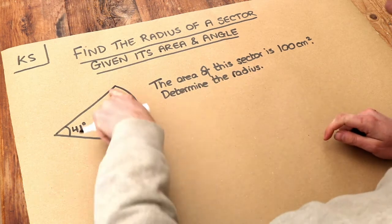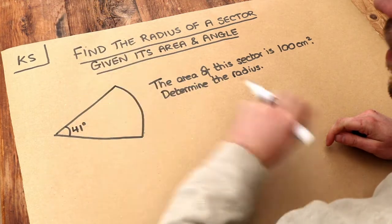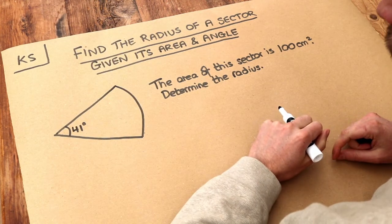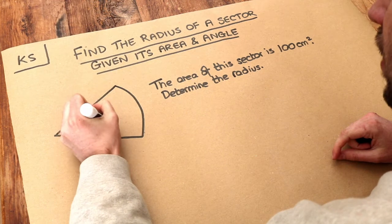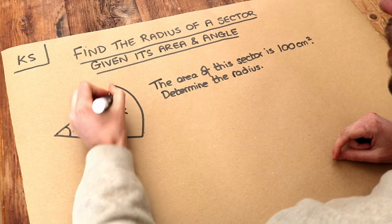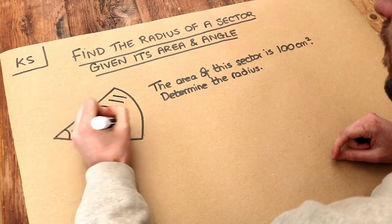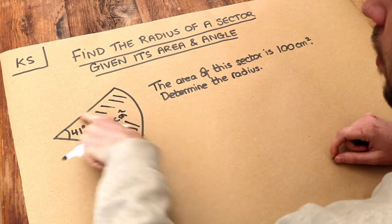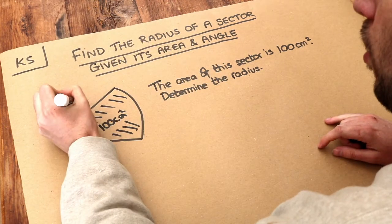Now remember, a sector is just like a pizza slice. It's like a slice of a full circle. We're told in this case that the area is 100 centimeters squared, so that's the full area of this sector, and we want to determine the radius. Let's just call this R for radius.